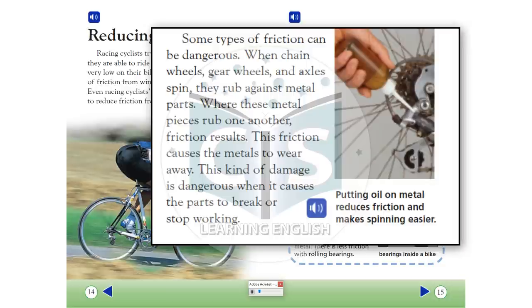Some types of friction can be dangerous. When chain wheels, gear wheels, and axles spin, they rub against metal parts. Where these metal pieces rub one another, friction results. This friction causes the metals to wear away. This kind of damage is dangerous when it causes the parts to break or stop working.